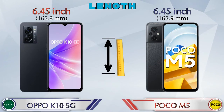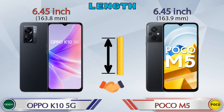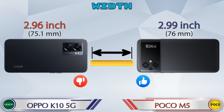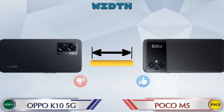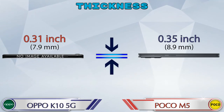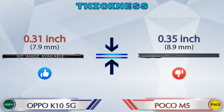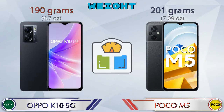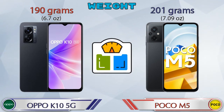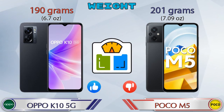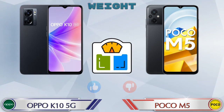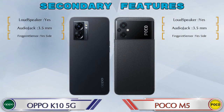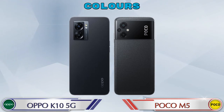Talking about dimensions: both phones have the same length of 6.45 inches. Width — the K10 5G is 2.96 inches and the POCO M5 is 2.99 inches. Thickness — the K10 5G is 0.31 inches and the POCO M5 is 0.35 inches, which is thicker. Weight — the K10 5G is 190 grams and the POCO M5 is 201 grams, which is heavier.